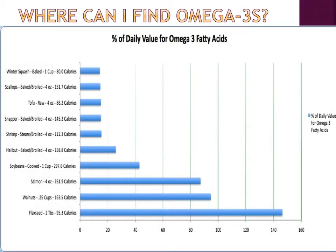Where can you find omega-3s? Here are some examples using a graph. Flaxseed has a lot in two tablespoons. Walnuts, salmon, and a lot of fatty fish — usually the pink-fleshed ones — will have more omega-3s. Soybeans, halibut, shrimp, snapper, and even tofu have a little bit of omega-3s. Scallops and winter squash also contain omega-3s.